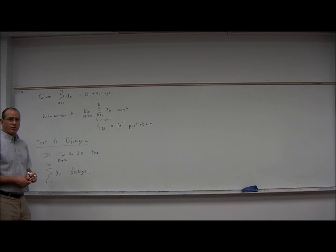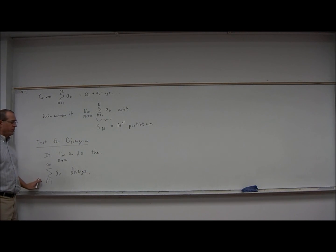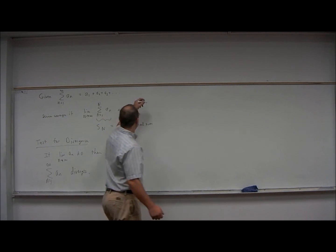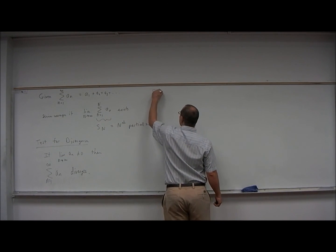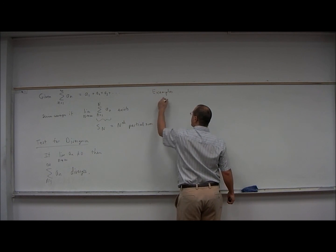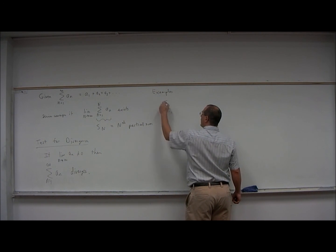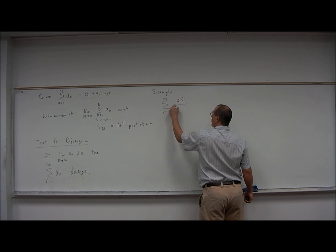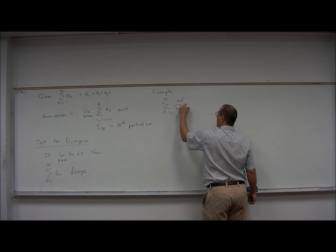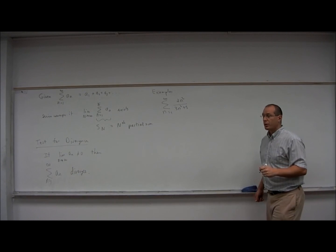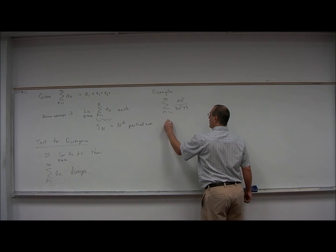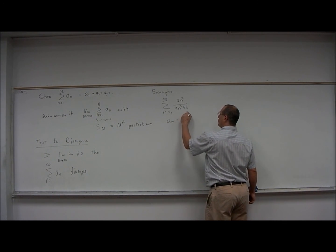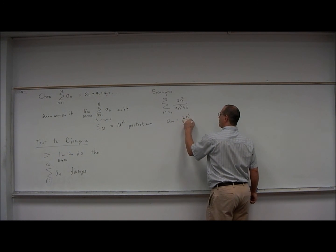Let's look at some examples of series which diverge due to the test for divergence. Let's consider the summation n equals 1 to infinity of 2n squared over 3n squared plus 5. In this example, a sub n is equal to 2n squared over 3n squared plus 5.